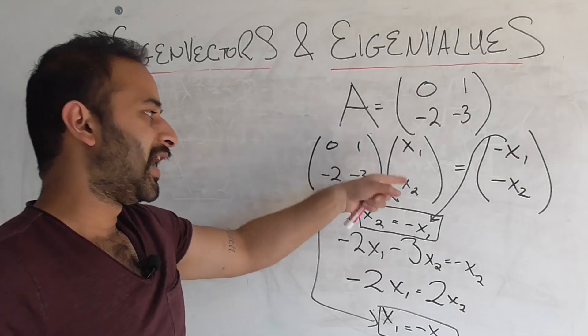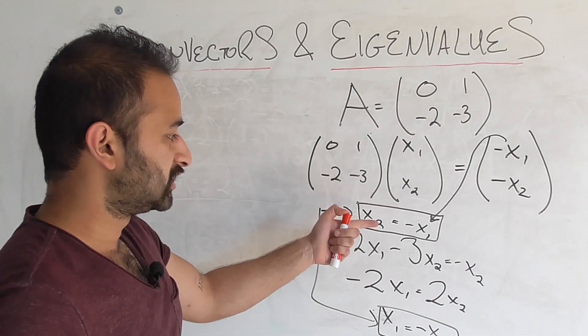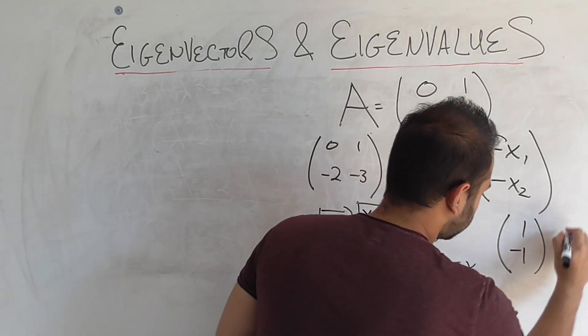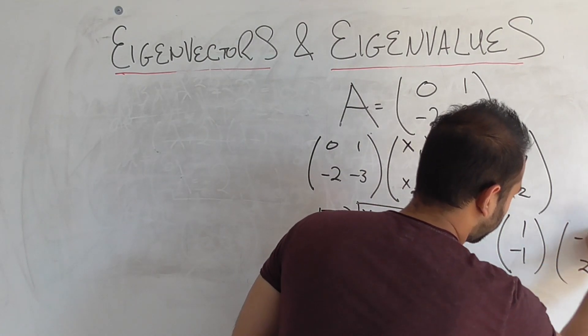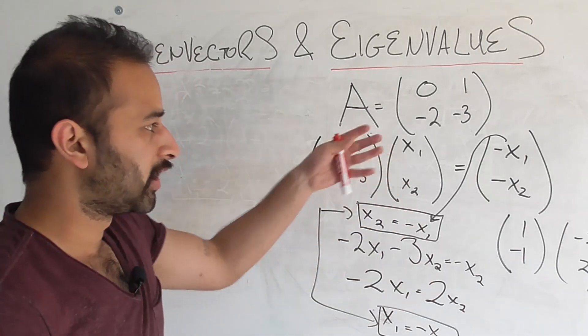You can use any vector in here, any eigenvector, such that x1 equals negative x2. For example, 1, negative 1 will work or negative 2, 2 will work. So there's a whole family of eigenvectors that go along with this one eigenvalue.